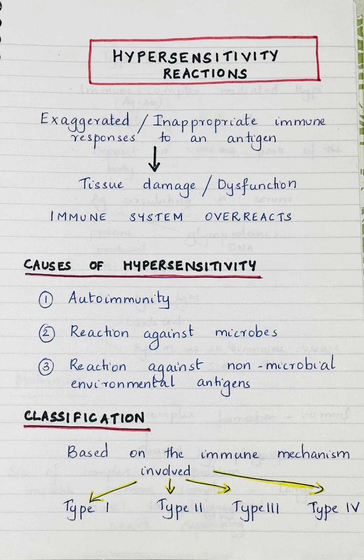Now what is the reason behind hypersensitivity reaction? One reason could be autoimmunity. Autoimmunity means our immune system mistakenly attacks our own body's cells and tissues as if they are foreign invaders. For example, in the case of rheumatoid arthritis, the immune cells attack the joints.